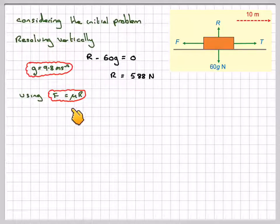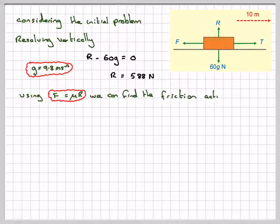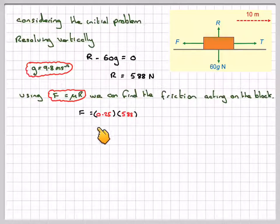Using F is equal to mu times R, the friction is equal to the coefficient of friction times the reaction. We can find the friction acting on the block. So that will be F is equal to 0.25, which is the coefficient of friction, times the reaction we've just calculated, which is 588, which gives me 147 newtons.